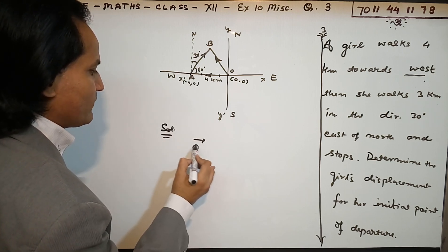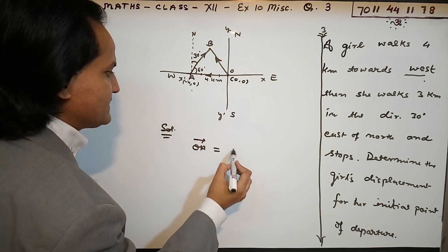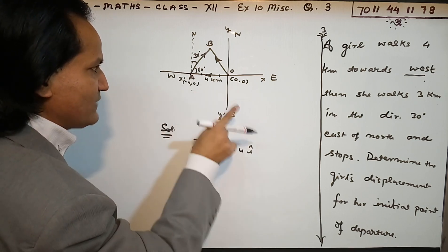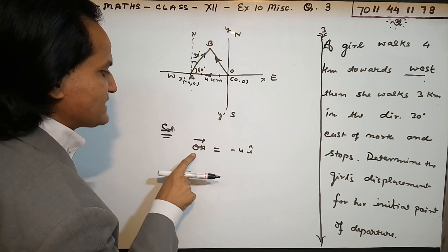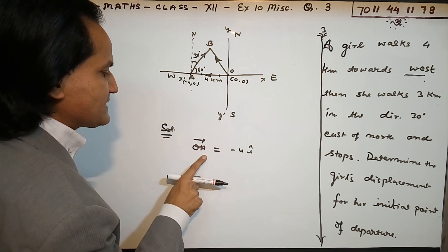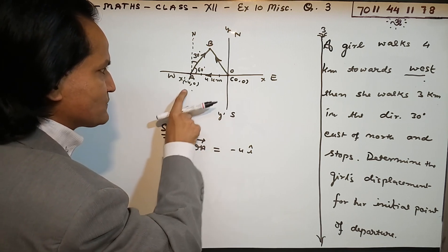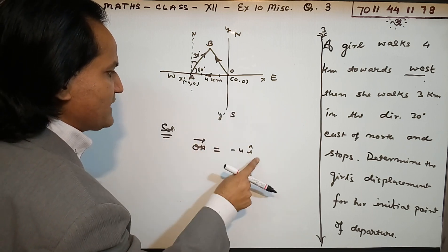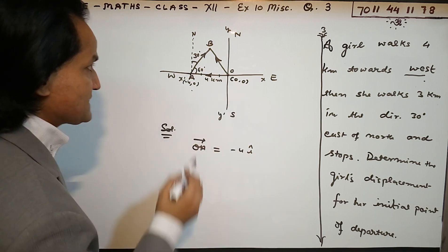Vector OA - definitely this is -4i. You can also do it by subtracting: from O to A directed, so A to O, you'll subtract the points: -4 - 0, so you'll get -4i.